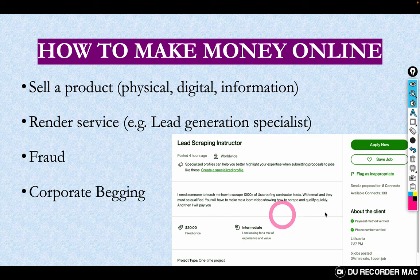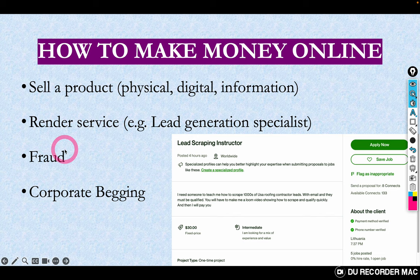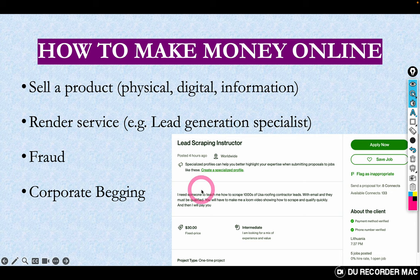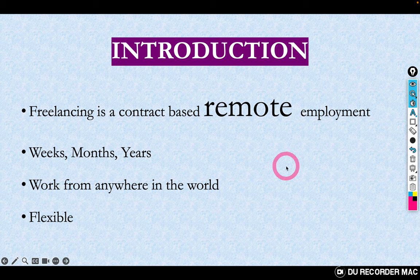The third way of making money online is fraud — if you don't sell a product and you don't render a service, what you're left with is fraud. And the fourth is what I call 'corporate begging' — commenting on videos, posting endlessly. I want to believe everyone watching this video should fall in the first or second category: selling a product, physical or digital, or rendering services. Please stay away from numbers three and four.